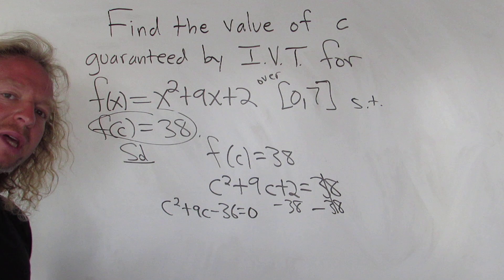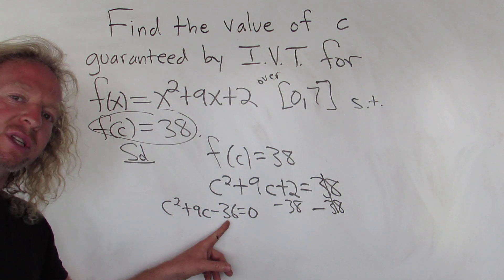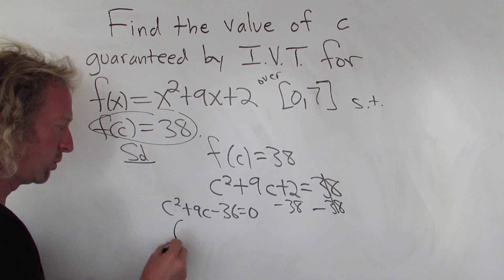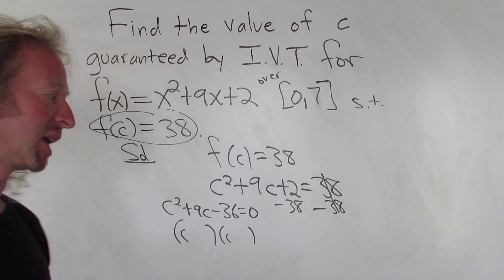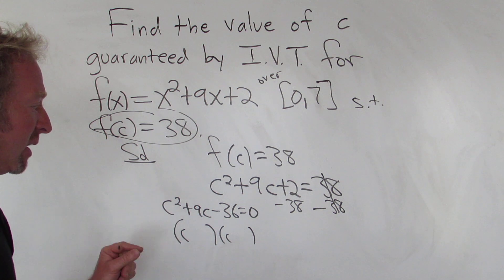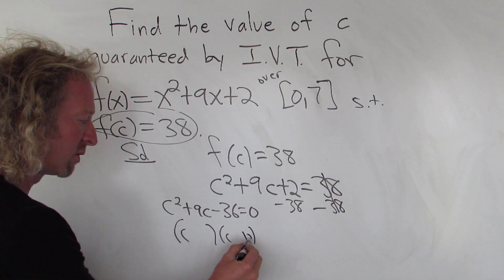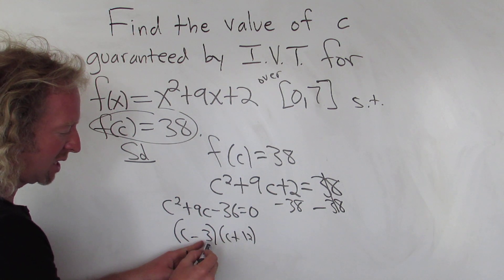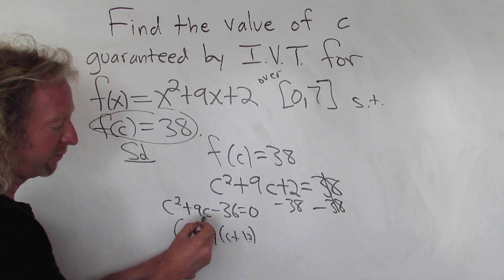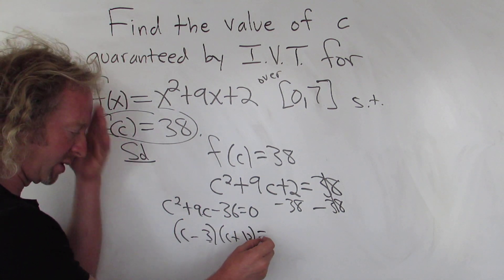So now we need two numbers that multiply to negative 36 but add to 9. Well, 4 and 9 multiply to 36 but that's not going to give us 9. 12 and 3. And I think the 3 needs to be negative because negative 3 plus 12 is positive 9. Yep, that works. Good stuff.